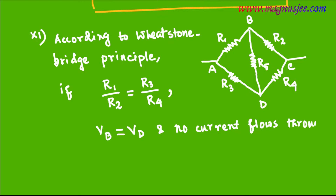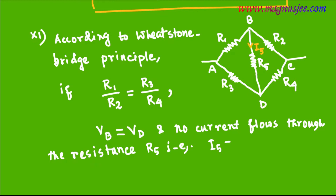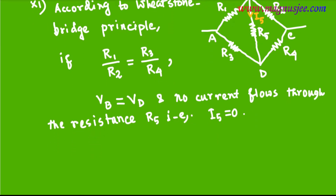No current flows through the fifth resistance R5, which is connected between points B and D. According to Wheatstone Bridge principle, I5 will be equal to 0 — that is, no current flows through R5. Hence, the fifth resistance R5, with points B and D having the same potential, can be neglected or removed from the circuit.